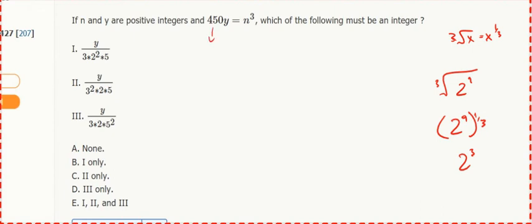So we have to see how 450 is sitting. That's 45 and 10, 2 and 5, 9 and 5, 3 and 3, so that's 2, 3 squared, 5 squared. So that times y equals a perfect cube.